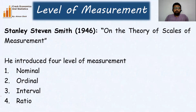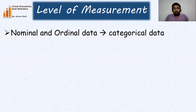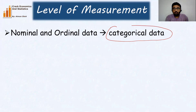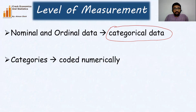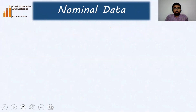In this video, we are going to discuss these two levels of measurement — nominal and ordinal. Both are categorical data. We give codes to each and every category of the nominal or ordinal variable, so we define the categories numerically. Now let's understand the idea of nominal data.